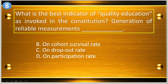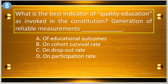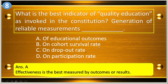Number eight: what is the best indicator of quality education as invoked in the Constitution? Generation of reliable measurements — A, educational outcomes; B, cohort survival rate; C, dropout rate; and D, participation rate. The answer is letter A, educational outcomes.